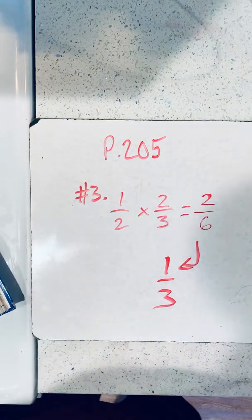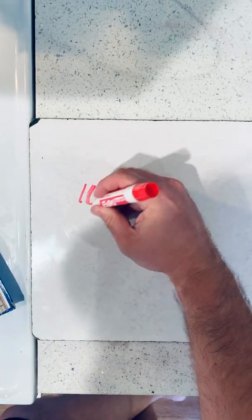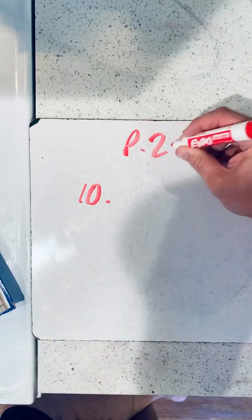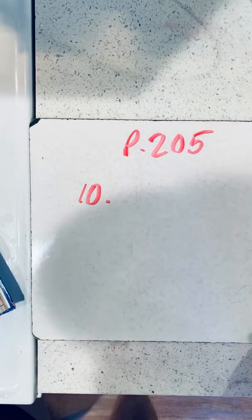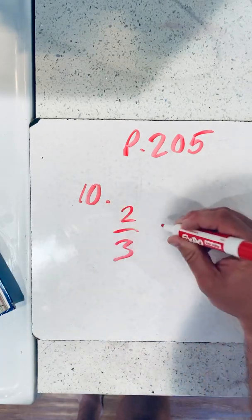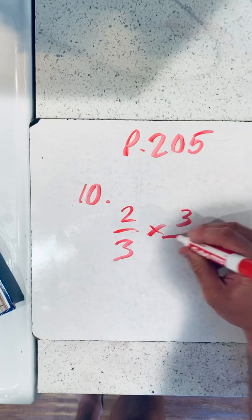So when you multiply using the GCF, we're on page 205 right now. I'll try to do another example. We're going to go with number 10. It says multiply using the GCF. So it would be 2 thirds times 3 thirteenths.